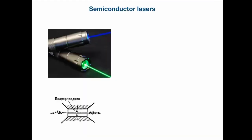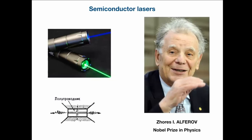Bardeen got two Nobel Prizes and is the only person who received two Nobel Prizes in the same field of science. Both his discoveries were so impressive that an exception was made. Silicon has an indirect band gap, so optical transitions are very inefficient. For optoelectronic devices like lasers, III-V materials are important, and a great contribution was made by Zhores Alferov, who received the Nobel Prize in Physics — he was my teacher.